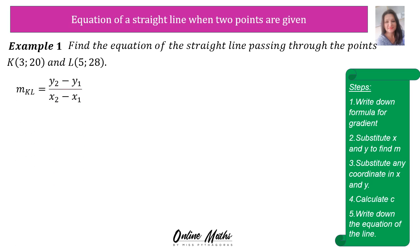First of all we start with the gradient formula. The gradient KL is equal to y2 minus y1 over x2 minus x1. Then you write down your two coordinates that you're going to substitute. My advice to you is on top of your coordinate you write there x2, y2, x1, y1. That is going to help you when you substitute.